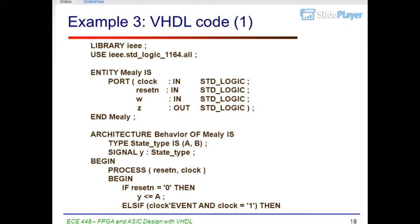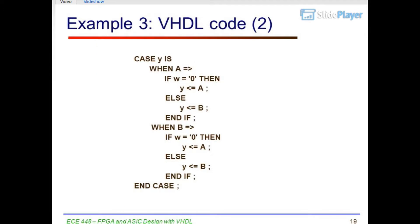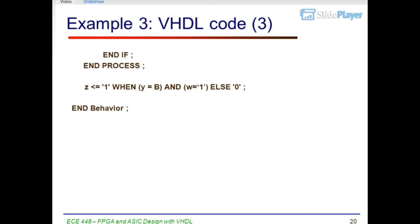Process (reset, clock). If reset = '0' then Y <= A. Else if clock'event and clock = '1' then. End if. End if. End process. Z <= '1' when Y = B and W = '1' else '0'. End behavior.